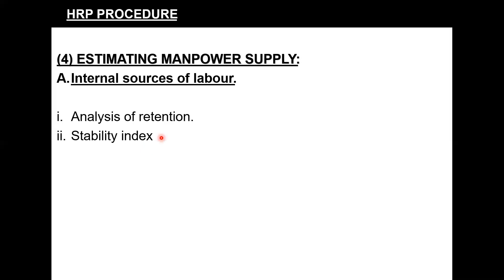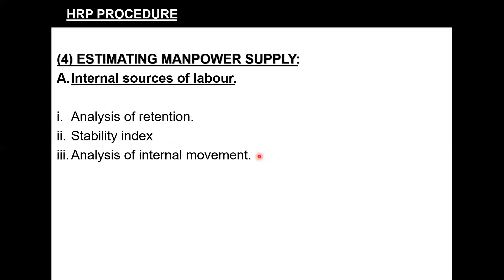The stability index indicates the number of employees who stay with the organization for a longer period — for example, throughout a year. Analysis of internal movement refers to movement of workers within the organization: transfers from one department to another, promotions, or demotions. These movements create vacancies or posts lying idle that need to be filled. These were the internal sources of labor supply.